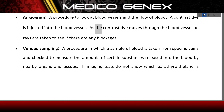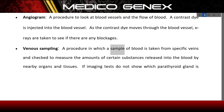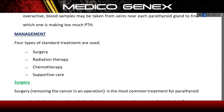Venous sampling: a procedure in which a sample of blood is taken from specific veins and checked to measure the amounts of certain substances released into the blood by nearby organs and tissues. If imaging tests do not show which parathyroid gland is overactive, blood samples may be taken from veins near each parathyroid gland to find which one is making too much PTH.